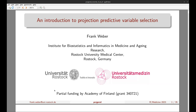The aim of PPVS is to select the smallest submodel achieving the best predictive performance with respect to the reference model's posterior predictive distribution. In other words, we aim for a trade-off between sparsity and predictive accuracy.